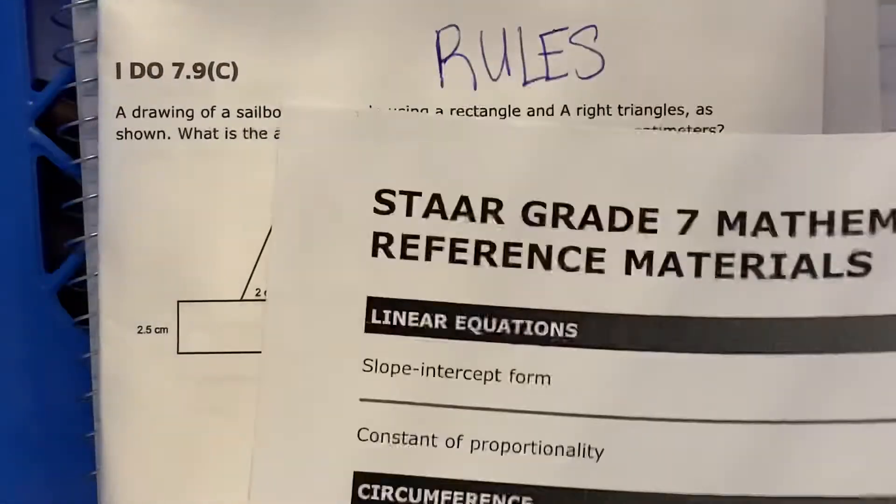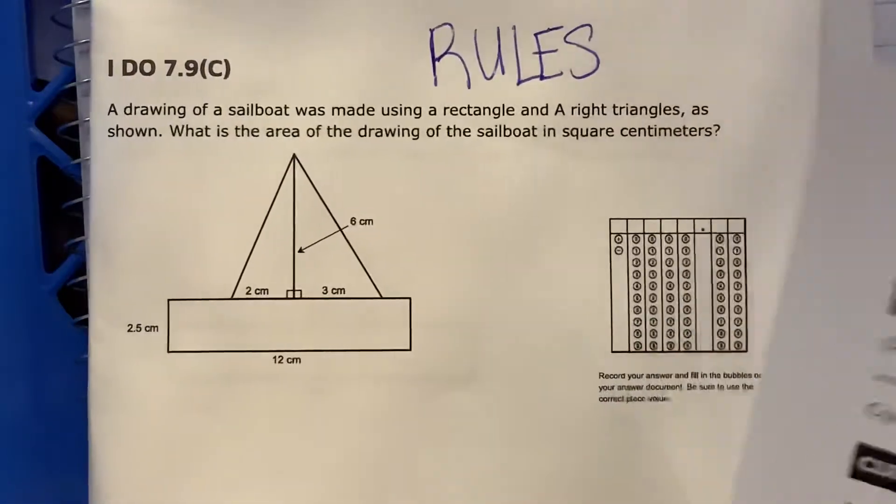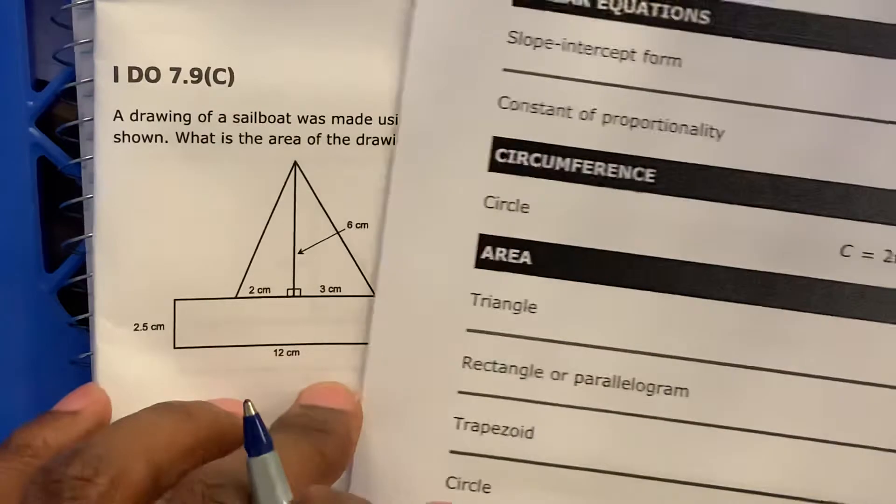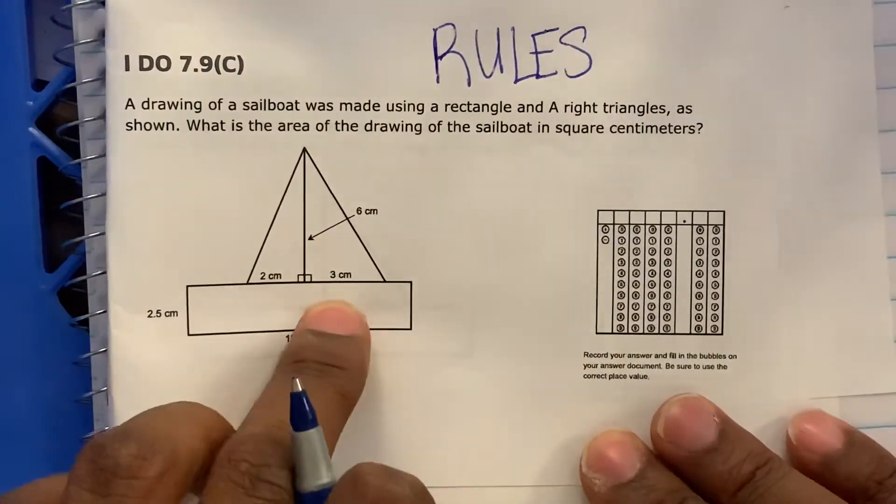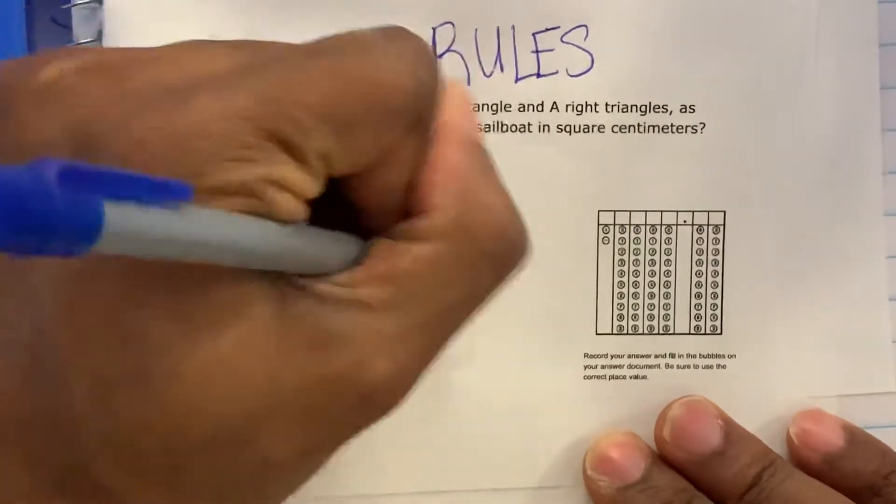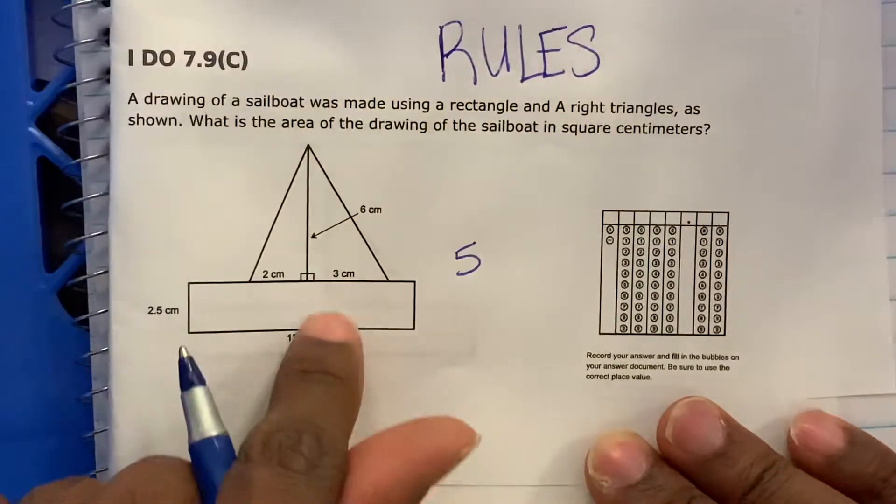So let's look back here. So this triangle has a base of two plus three, which is five, and then the height is six.